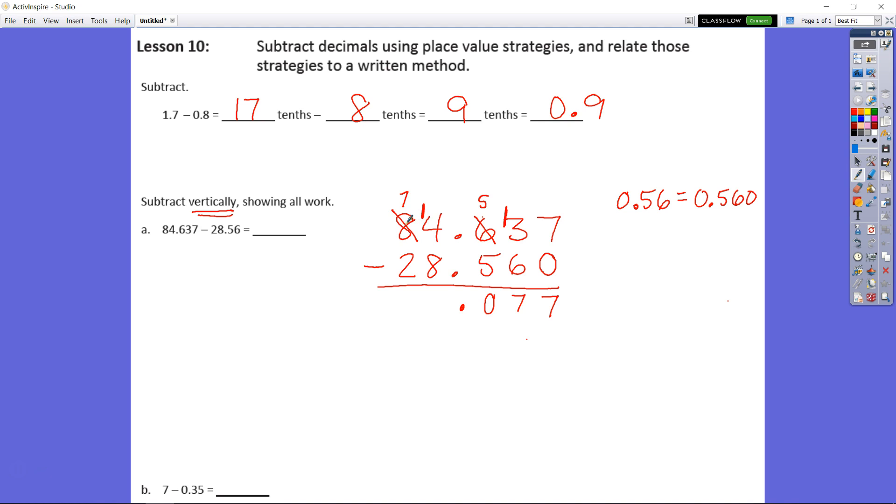So since I took 1 of my tens away, 8 tens now drops to 7 tens and now I have 14 ones instead of 4 ones. I know that 14 minus 8 is 6 and 7 tens minus 2 tens is 5 and there's my answer, 56 and 77 thousandths.